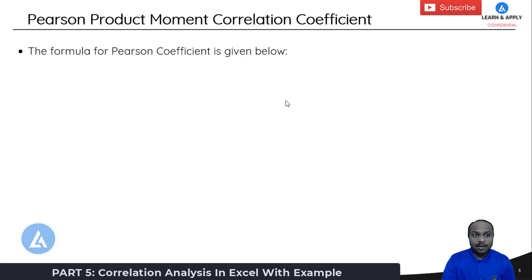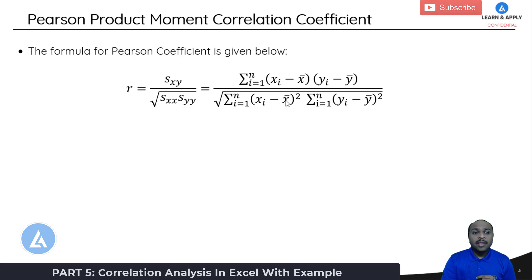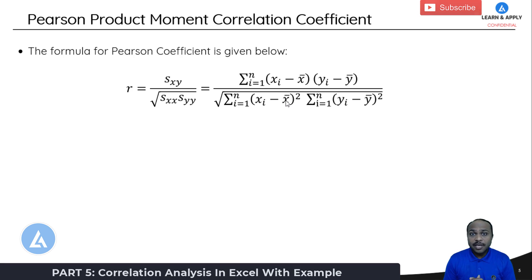After understanding correlation and causation, let's jump into the next part — how we calculate this correlation coefficient. This correlation coefficient is also called Pearson's product moment correlation coefficient. The formula for the Pearson coefficient is given by R = SXY divided by the square root of SXX times SYY. If you want to learn in detail how to calculate this Pearson correlation, you can check out my complete detailed course on correlation and regression analysis by clicking the link provided in the description.